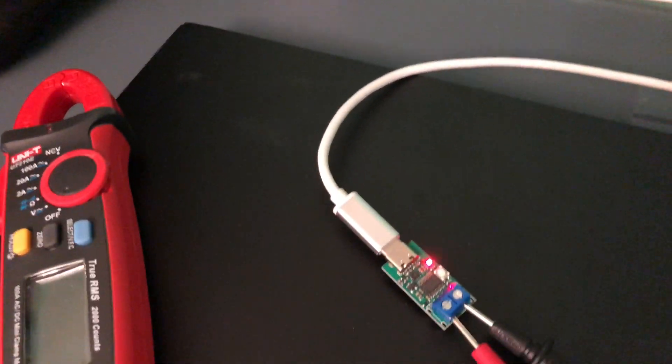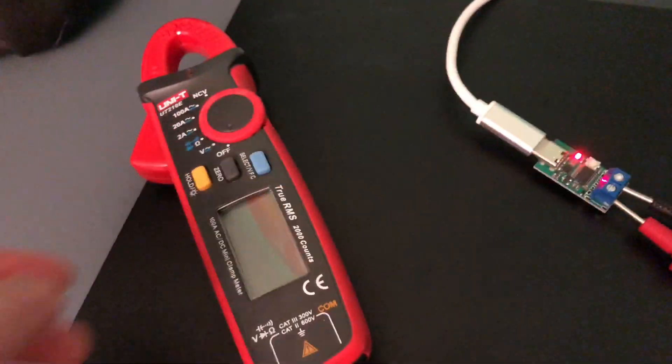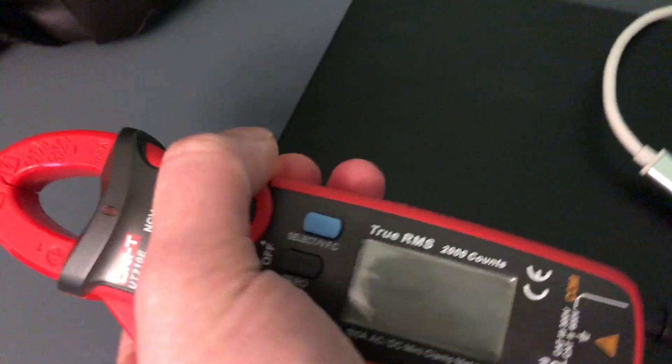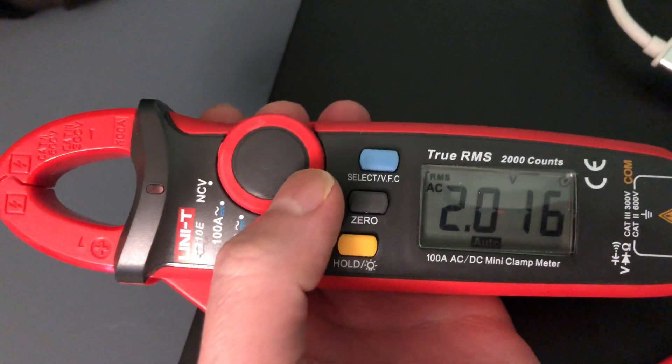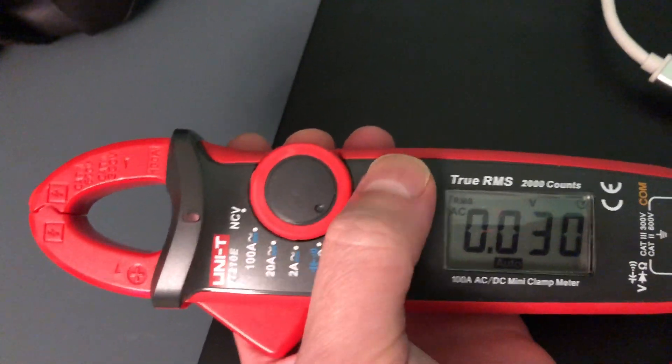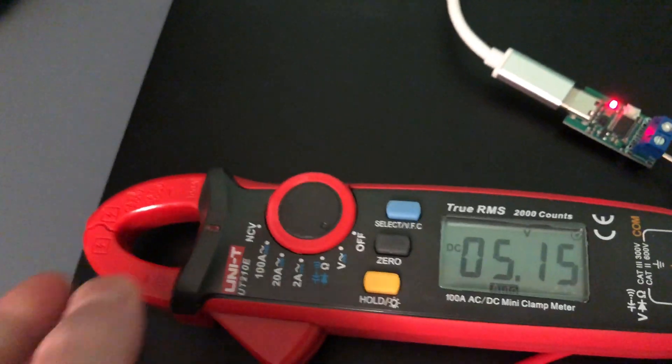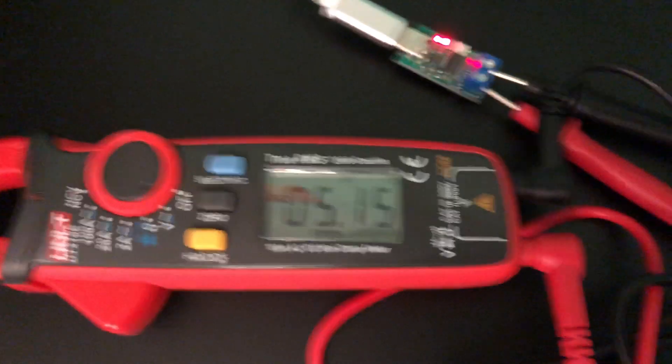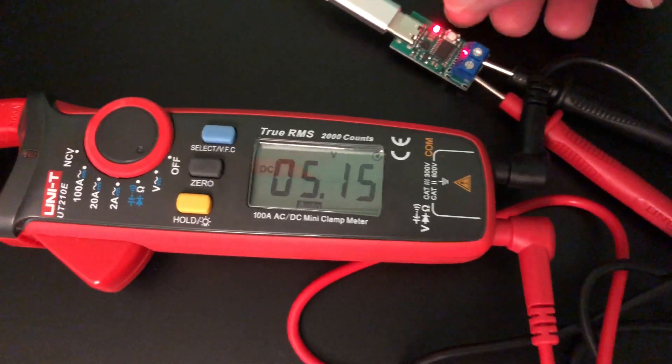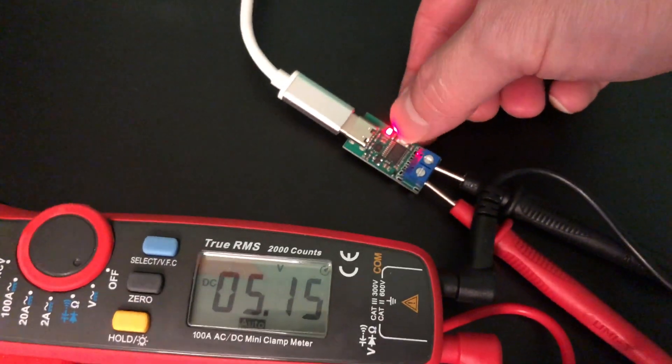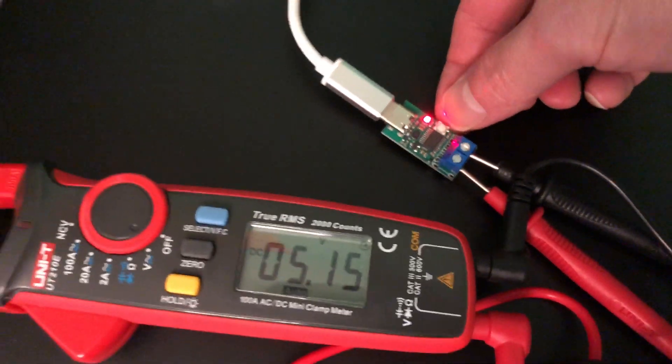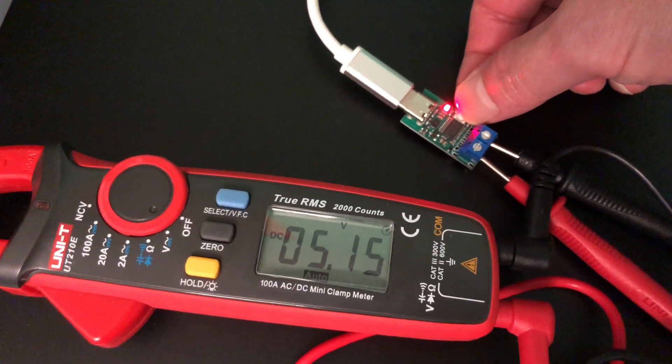I'm going to turn on my multimeter and set this to DC. As you can see, it's measuring about 5 volts now and the LED is red. If I press this little button here, the LED changes to green and now it's requesting 9 volts of power from the power adapter.